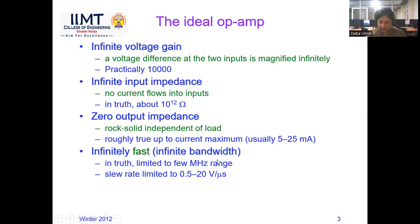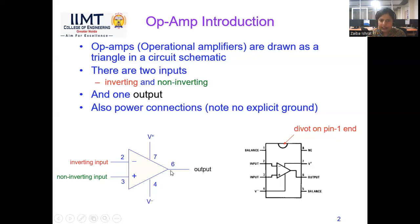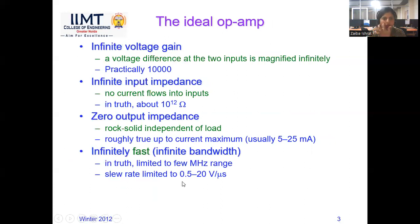The third characteristic is zero output impedance. At pin 6, the output resistance is almost zero. If output resistance is zero, the current or voltage drop across it is negligible, so losses at the output path are negligible and the total signal is transferred to the output. In practice, the current that can flow from the output terminal is around 5 to 25 milliamperes.